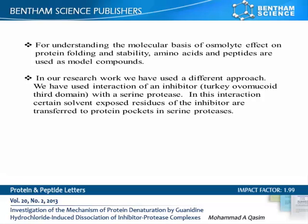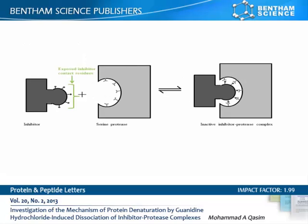Inhibitors like turkey ovomucoid third domain have several exposed amino acid side chains which get embedded in the protease pockets upon complex formation. The model presented in this slide explains our approach.